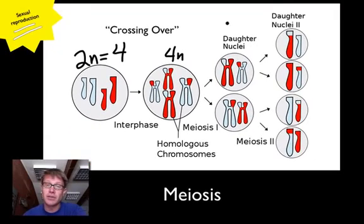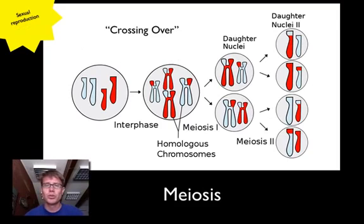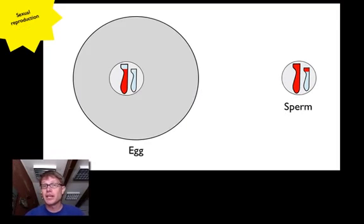They'll divide in half. Now we have two n cells. And then eventually we'll have n cells equals 2. So we started with 2n equals 4. Now we have n equals 2. Each of these four things in a male become a sperm. And in a female, one of them will become an egg. And the other ones will actually form what are called polar bodies.